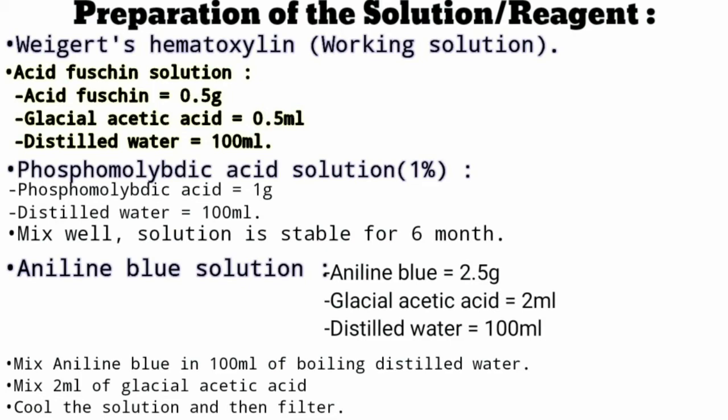To prepare Weigert's hematoxylin, we mix solution A and solution B together. For acid fuchsin solution, we need acid fuchsin 0.5 gram, glacial acetic acid 0.5 ml, and distilled water 100 ml. Mix them together, then filter, and our acid fuchsin solution is ready.